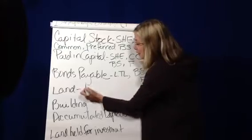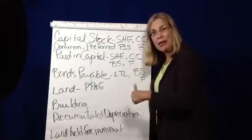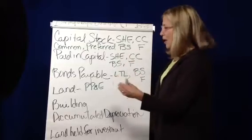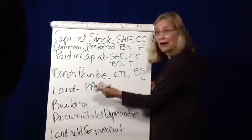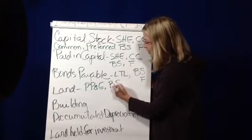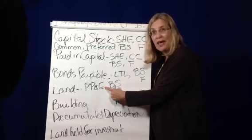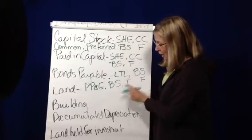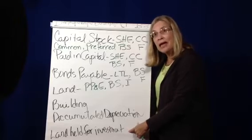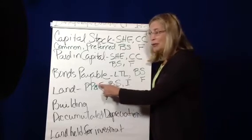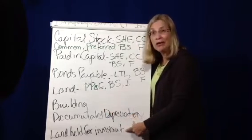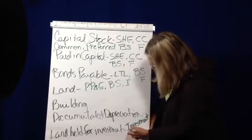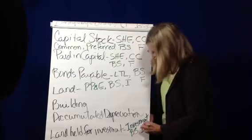Land is property, plant, and equipment because it's being used productively in the business to generate revenues. PP&E is an asset account, so assets show up on the balance sheet. And because it's a non-current asset, it is an investing activity on the statement of cash flows. Land held for investment is different — it means you're not productively using the land to generate revenue, you're just holding it. So it's an investment, not property, plant, and equipment. It's still on the balance sheet, and it's still an investing activity.